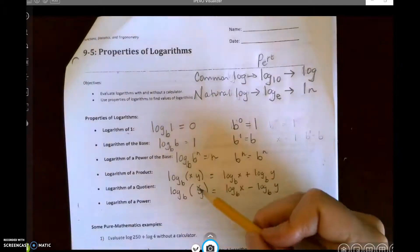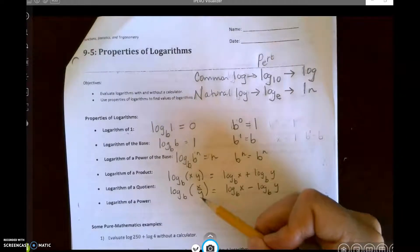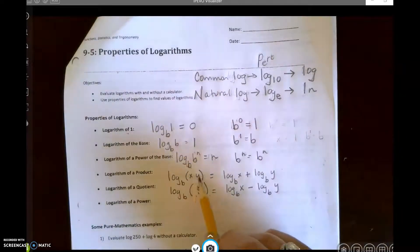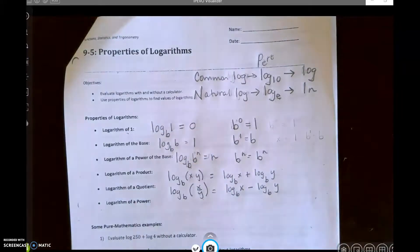So logarithm of a quotient is going to be log base b of x over y equals log base b of x minus log base b of y. Because when you divide with exponents, remember, you subtract. You multiply, you add; you divide, you subtract.